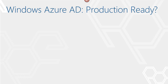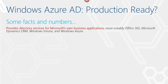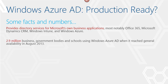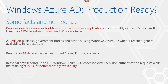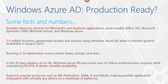Is Windows Azure AD a production-grade service? The short answer is yes. Azure AD is the directory service for Microsoft's own business applications — Office 365, Exchange, SharePoint, Dynamics CRM, and Windows Azure itself all rely on it. At general availability in August 2013, 2.9 million entities were using it. It's a global service running in 14 data centers across the US, Europe, and Asia. In the three months prior to GA, Azure AD processed over 65 billion authentication requests at 99.97% monthly availability, supporting protocols like WS-Federation, SAMLP, and OAuth.